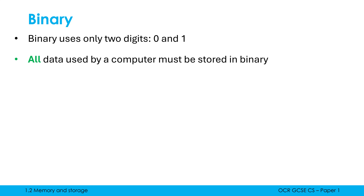Something which is really hard to comprehend initially is the fact that all data used by a computer must be stored in binary. A computer is designed to only be able to work with things stored in binary, which means everything we want to use in a computer has to get represented in binary. Some things like numbers are simple to represent because it converts easily between denary and binary. Other things like images, sound, and text, you have to invent other ways to represent in binary.